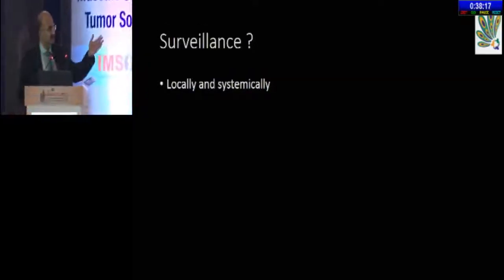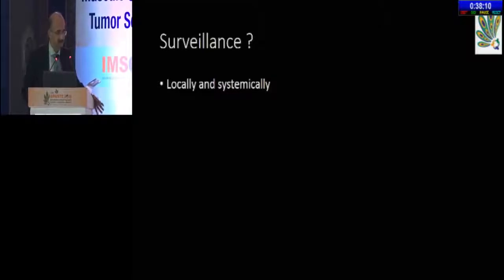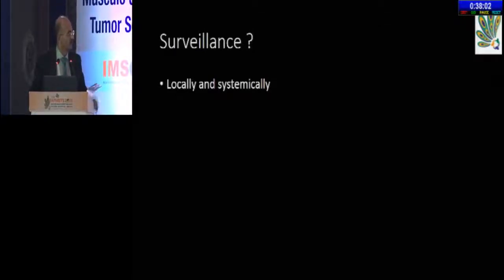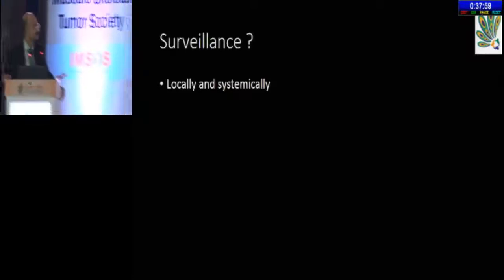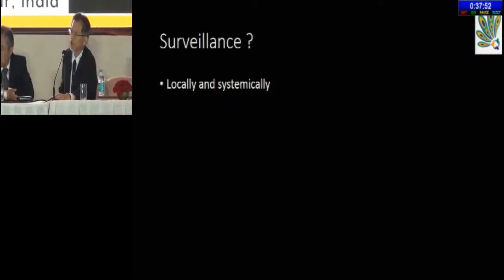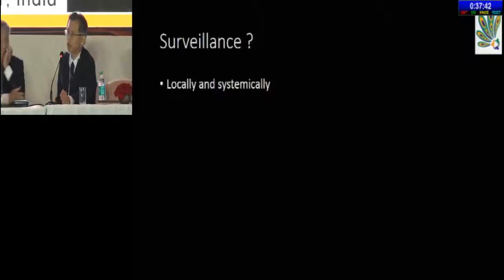Coming to the surveillance part: this patient has been operated on, good margins, R0 resection, and has been treated with post-operative radiotherapy. What would be the recommendation for surveillance — how often and how should we investigate this patient? Professor Katagiri: normally we take a CT scan at a six-month interval and X-ray at a three-month interval. After surgery, alternating: three months X-ray, three months CT scan, and so on.